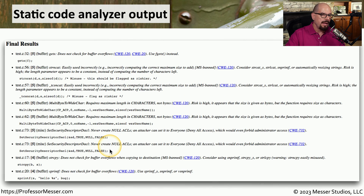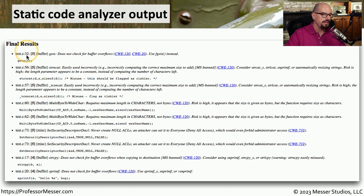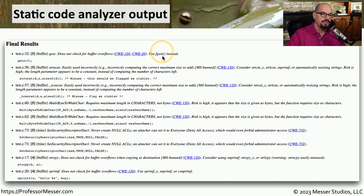Here's a sample of some output from a static code analyzer. You can see there are a number of issues that need to be addressed within the code of the application. For example, in the first line of the static code analyzer output, you can see that file test.c on line 32 has a problem with the gets function because it doesn't check for a buffer overflow. This analyzer even gives recommendations to use fgets instead of gets.